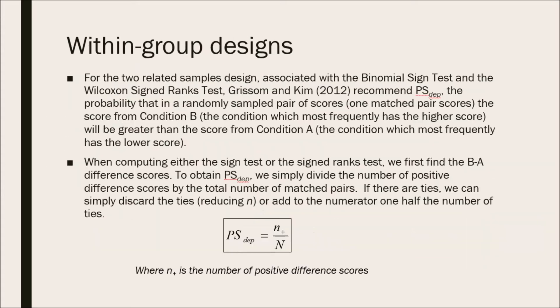Moving on to within-group designs. For the two-related samples design associated with the binomial sign test and the Wilcoxon signed rank test, Grissom and Kim recommend the PSDEP effect size index. The PSDEP index represents the probability that in a randomly sampled pair of scores, the score from condition B, the condition which most frequently has the higher score, will be greater than the score from condition A, the condition which most frequently has the lower score.